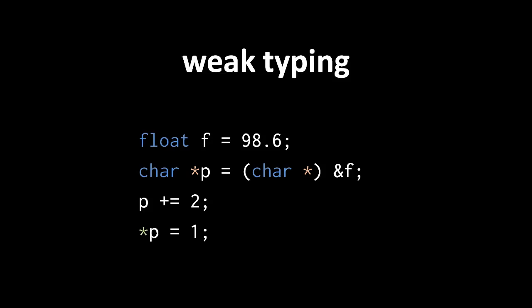We then increment P by 2, making the value of P represent the address of the third byte of the float. In the last line, we assign 1 to the dereference of P, so the char value 1 is written in the third byte of the float. Effectively, we have arbitrarily overwritten a portion of our float.